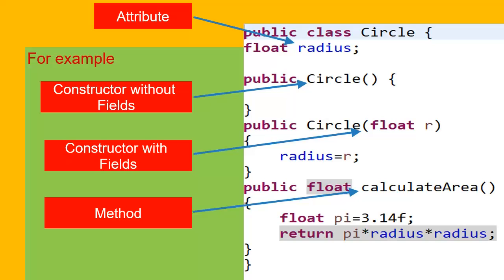Since constructors are not members of a class, it should be remembered that in the default constructor, the constructor of the superclass is called. In our example, the Circle class does not have any explicit superclass, so which superclass constructor will be called? We need to remember that there is a class named Object which is the superclass of all user-defined classes in Java. So in this case, the constructor of the Object class will be called.